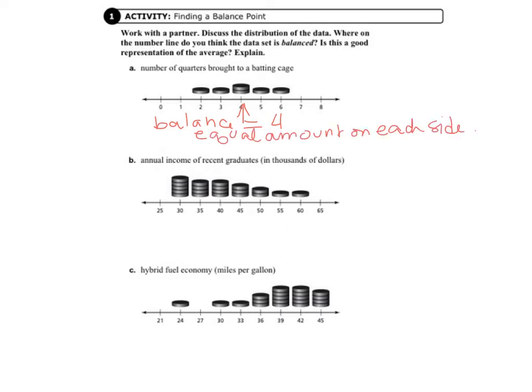Looking at letter B, annual income of recent graduates in thousands of dollars. So we don't want to go right to the middle of where it is because if we went to 45, then you can see that the stack of money, since these are thousands of dollars, so imagine that each of these coins is worth $1,000.